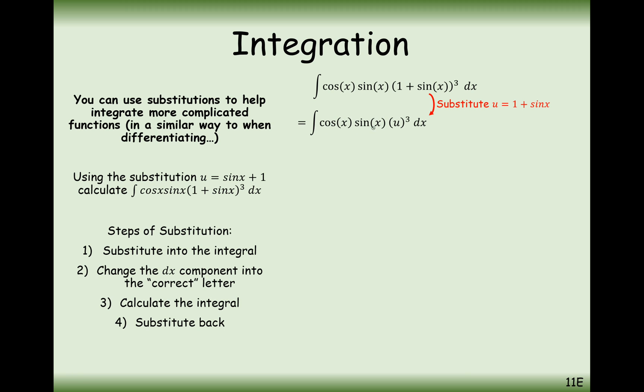We've still got two factors at the front that will need cancelling out at some point. The first thing I might do here is differentiate the substitution. In that case, we see that dx is equal to 1 over cos x du.